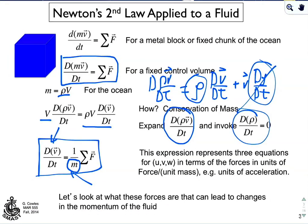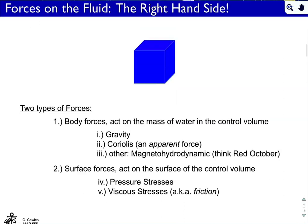Now, what are these forces? There are two classes. One are body forces — they act on all the molecules in the water column at the same time. For example, gravity acts on every single molecule in that box. Gravity is a body force. Coriolis, which is an apparent or fictitious force from applying Newton's law in a non-inertial coordinate system, is also a body force. There are others like magnetohydrodynamic forces as well.